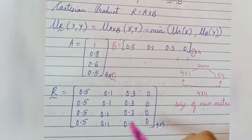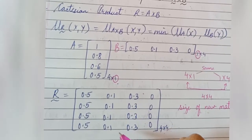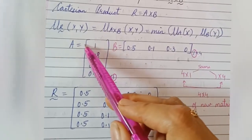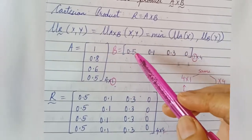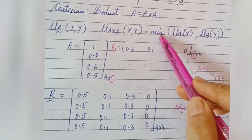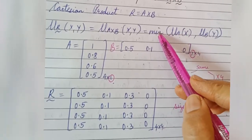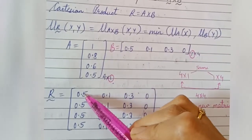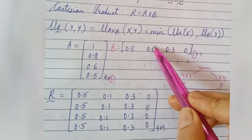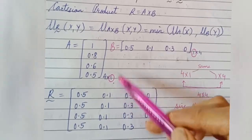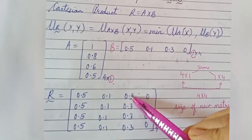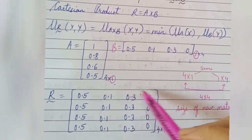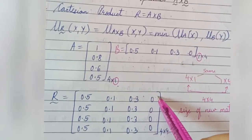Now let's calculate the values of the matrix. Select the first element from set A (the row element) and compare it with each element in set B, selecting the minimum each time. 1 and 0.5 → minimum is 0.5; 1 and 0.1 → minimum is 0.1; 1 and 0.3 → minimum is 0.3; 1 and 0 → minimum is 0. This is the first row of fuzzy relation R.